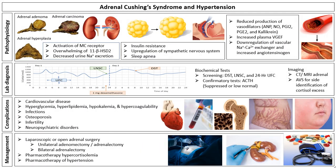Chapter 14, Adrenal Cushing Syndrome, by Oscar Ragnarsson provides the current evidence on the pathobiology, laboratory diagnosis, complications and management of adrenal Cushing syndrome and hypertension.